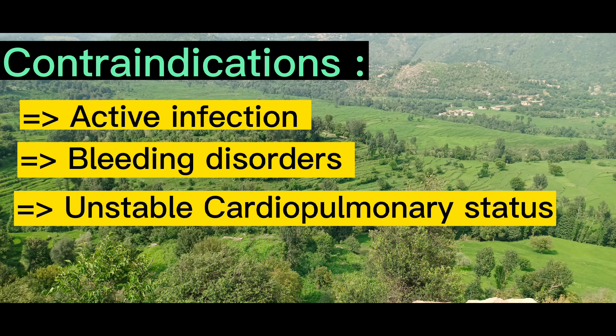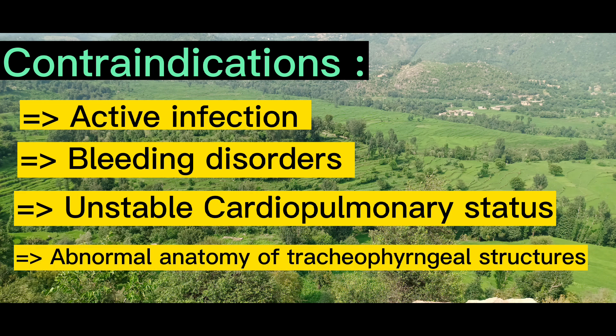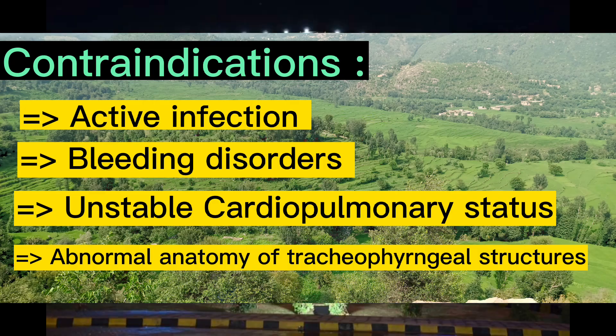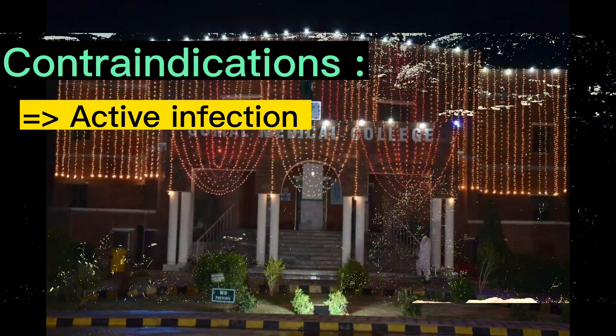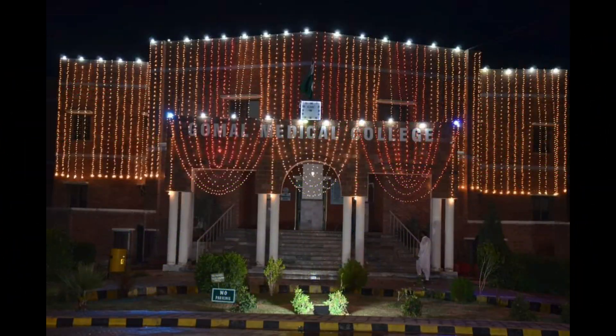The contraindications include: active infection at the site of tracheostomy, bleeding disorder, unstable cardiopulmonary status such as shock, and abnormal tracheopharyngeal structures — in these cases tracheostomy should not be done.